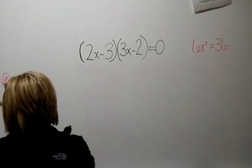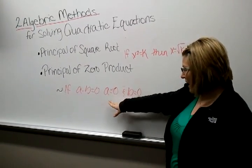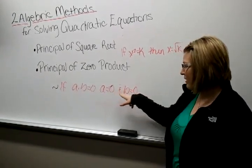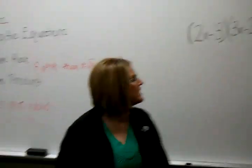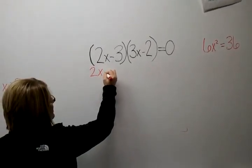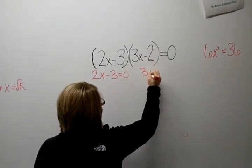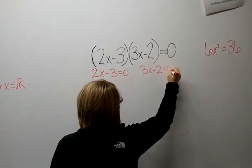Like Tasia just said, if a times b equals zero then it's the same as saying a equals zero and b equals zero. So the first thing we're going to do here is set both sides equal to zero. So we've got 2x minus 3 equals zero and we've got 3x minus 2 equals zero.